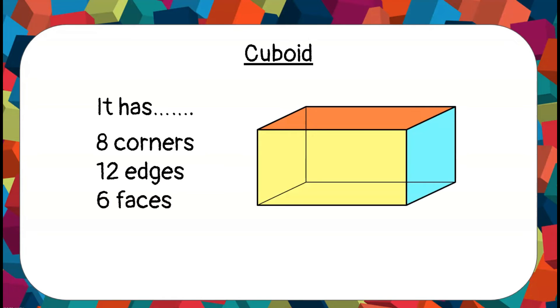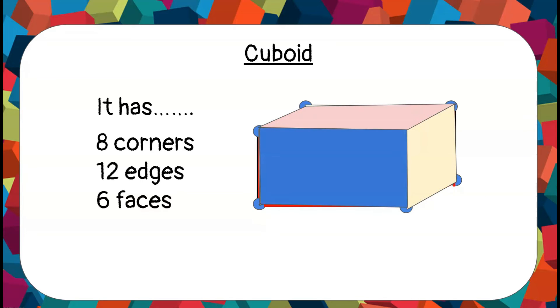Cuboid. A cuboid is actually the 3D form of a rectangle. It has eight corners, 12 edges, and 1, 2, 3, 4, 5, 6—six faces.